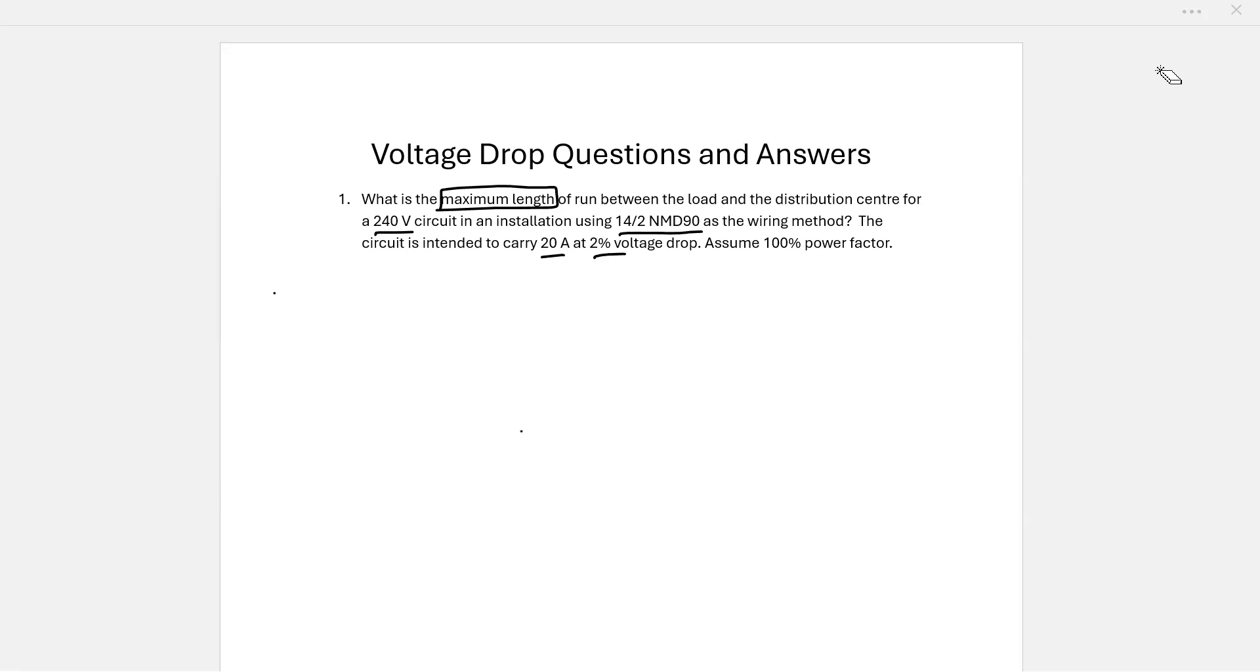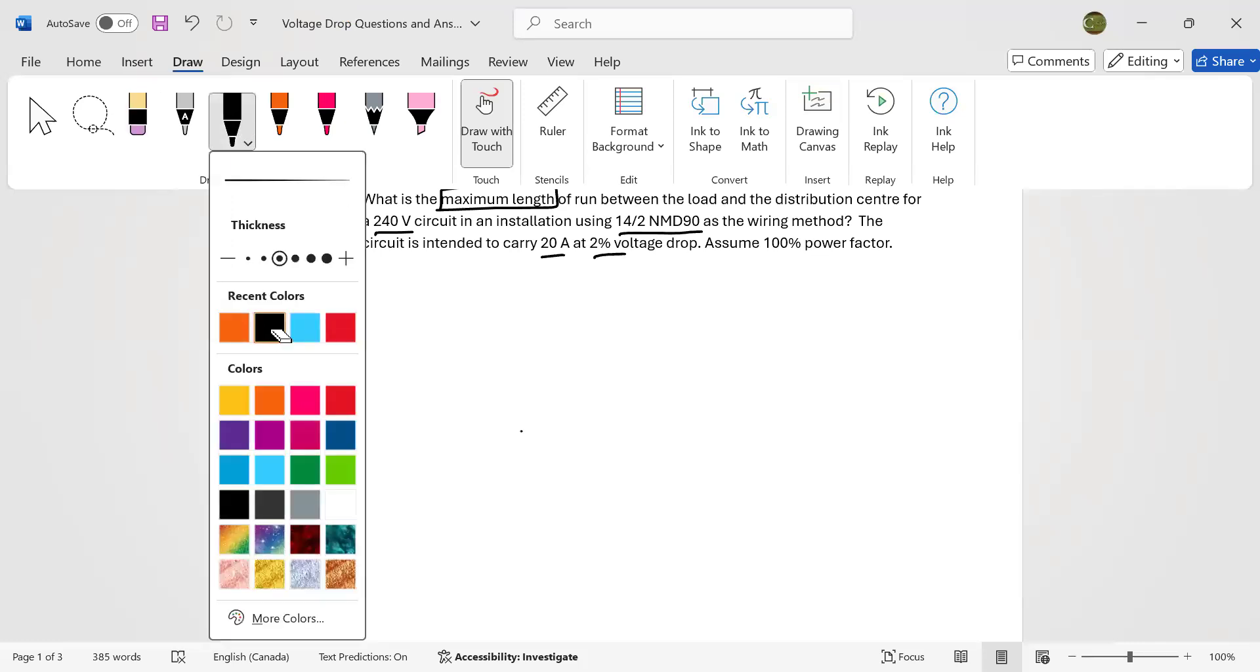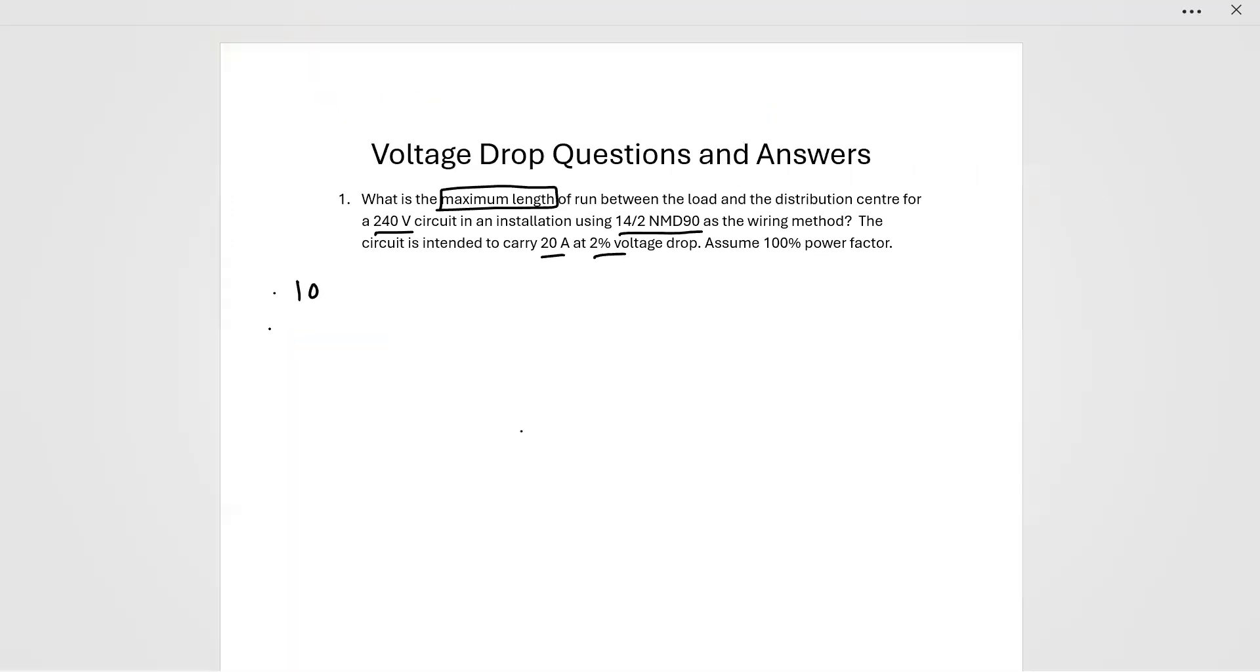So what I would do is I would always use the same formula to solve this. And I like to write the formula in the same way always. I have my 1000, and remember that's just a conversion factor between meters and kilometers.